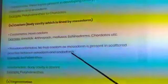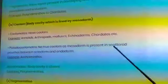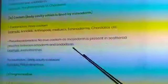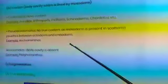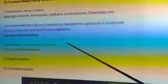Pseudocoelomates: no true coelom as mesoderm is present in scattered pouches between ectoderm and endoderm. Example: platyhelminthes.